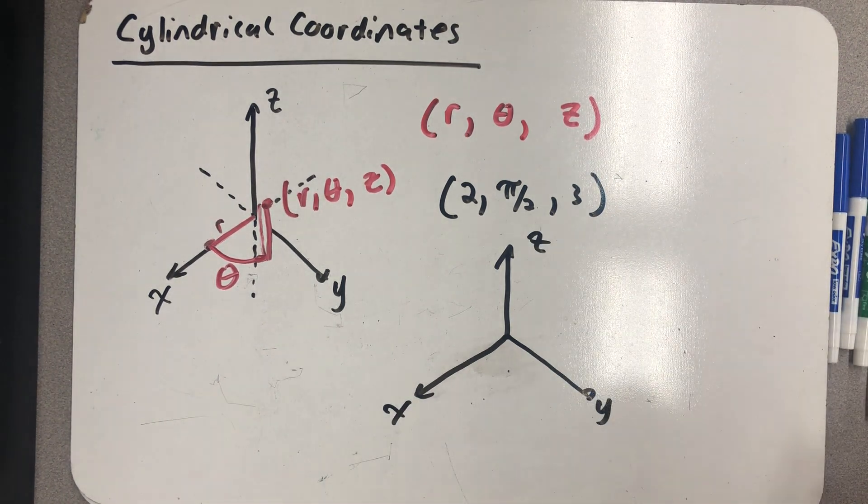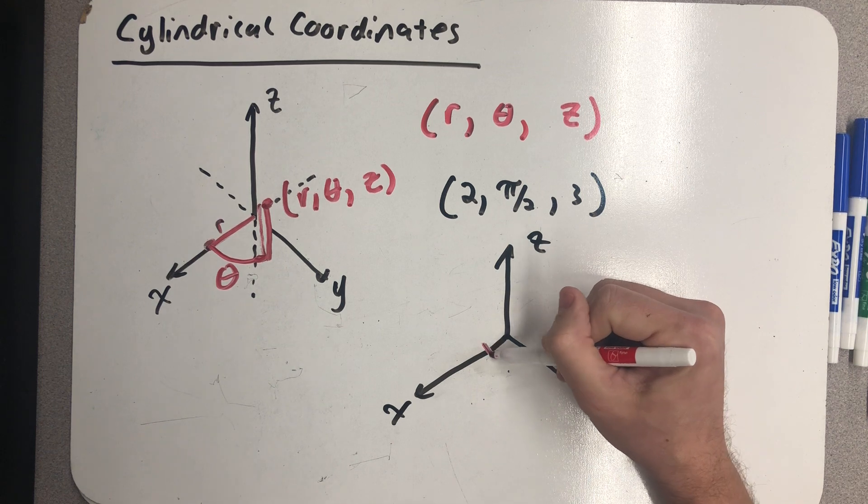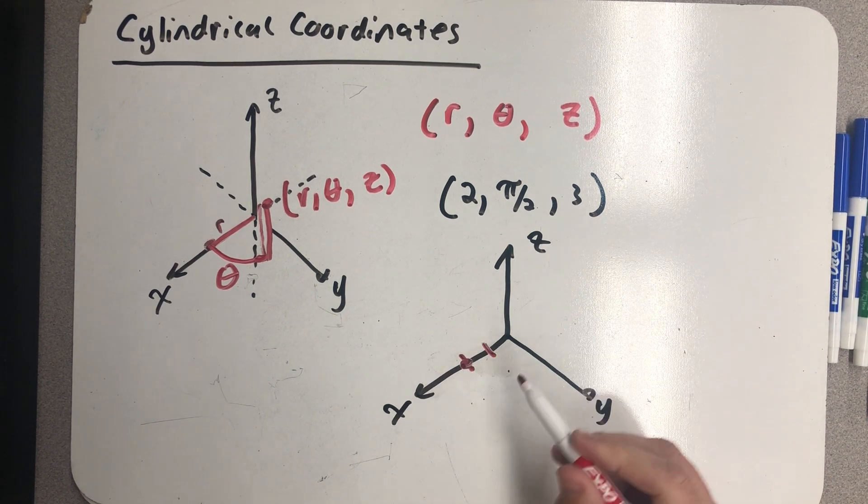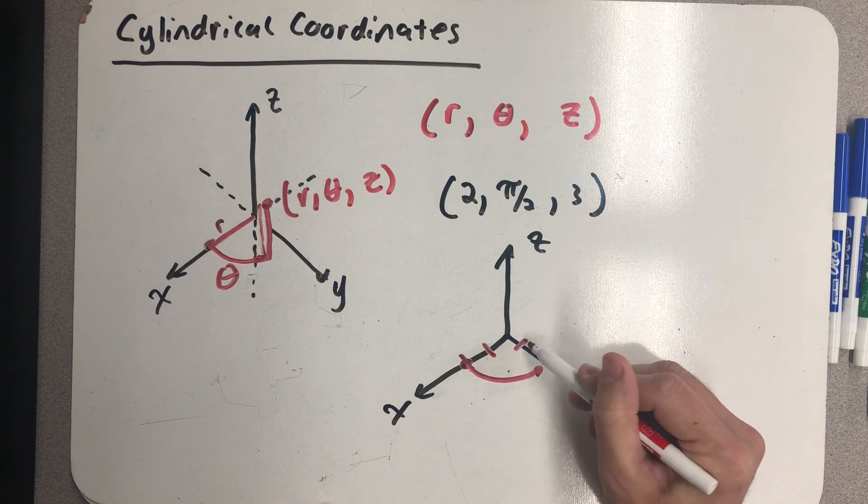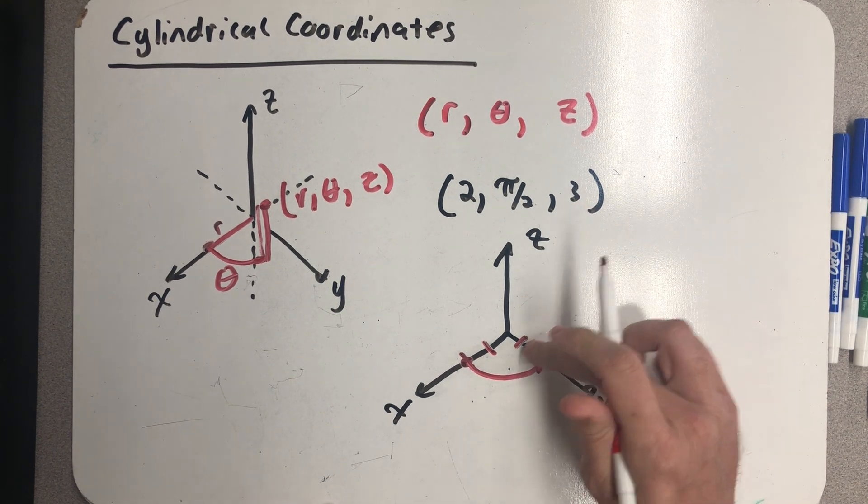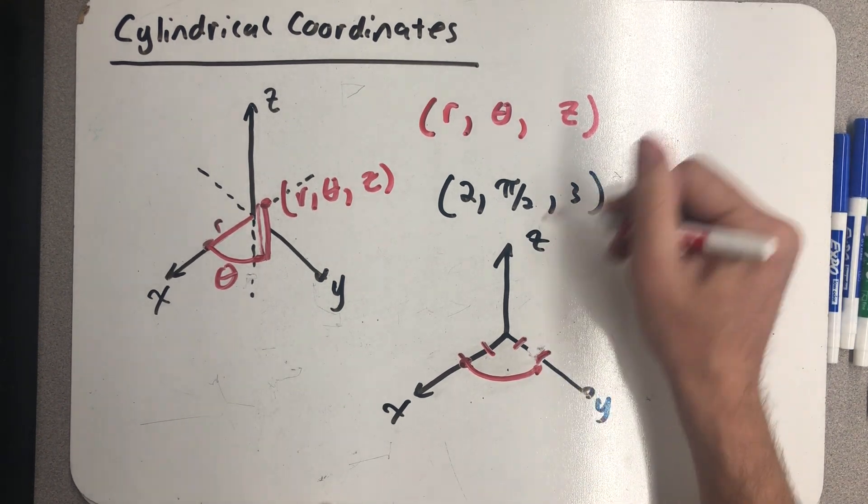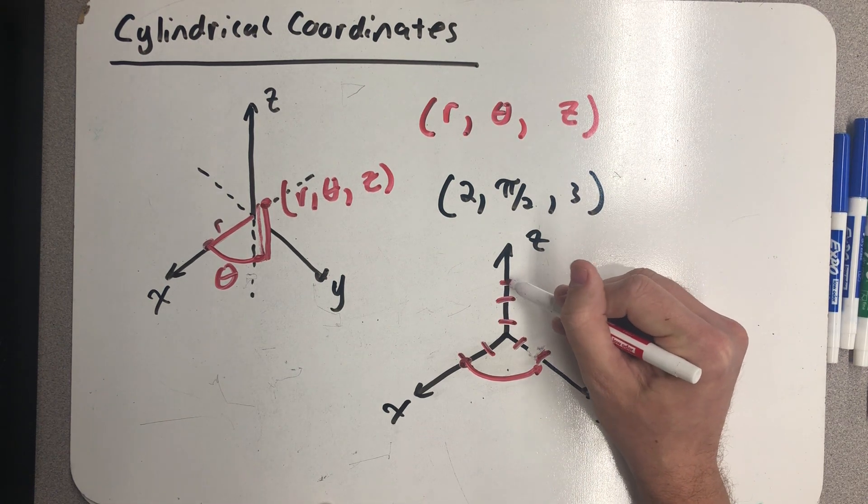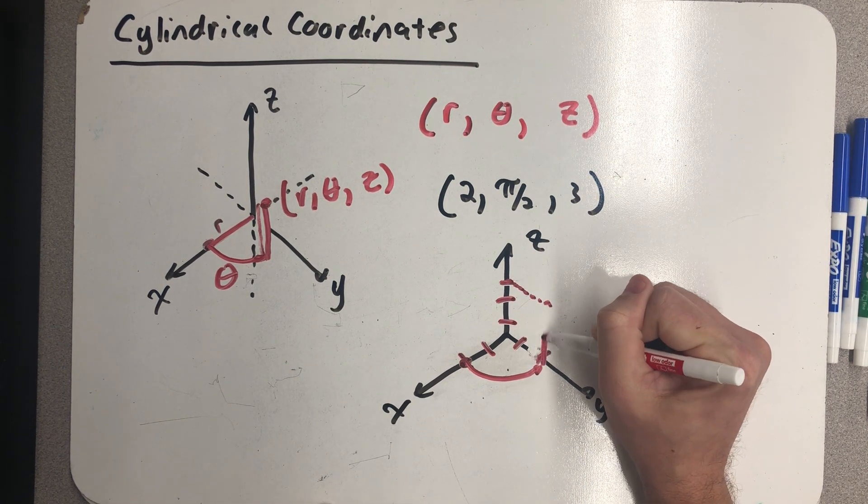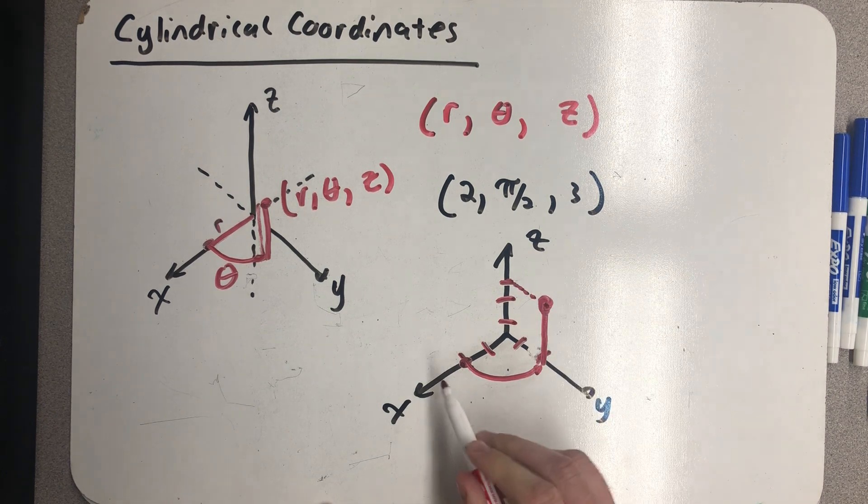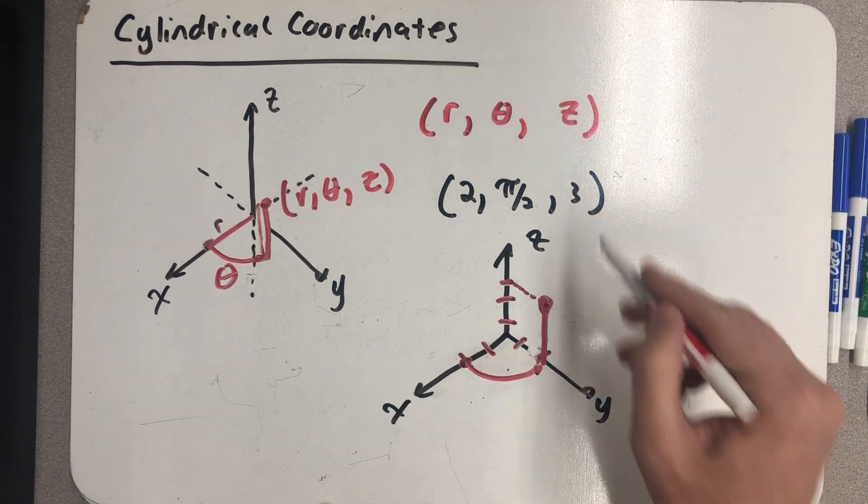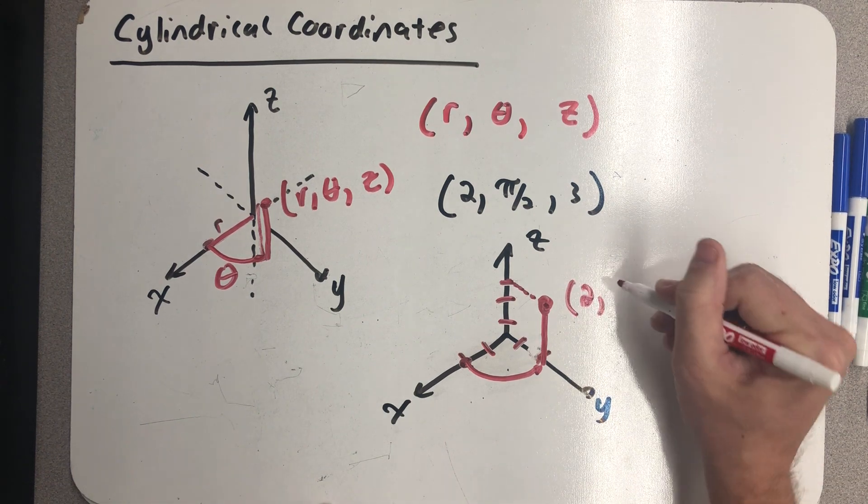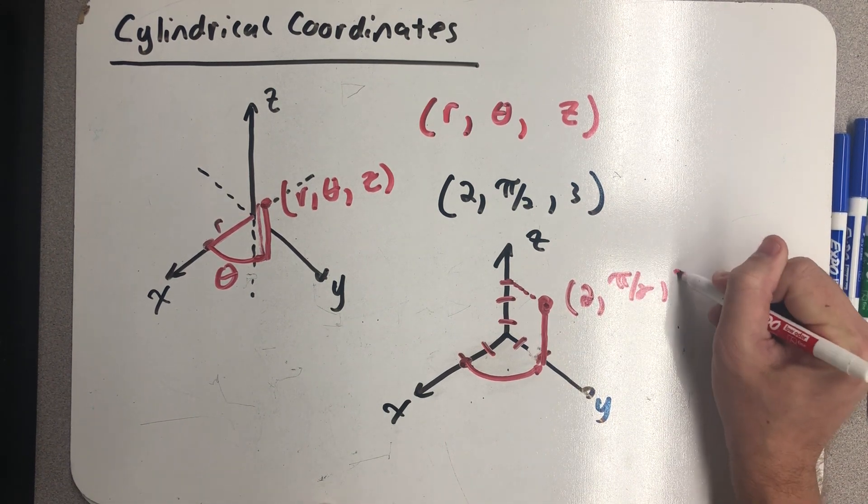So I would need to think about going two units out on the x axis, rotating an angle of pi halves, and then from that, out two units there, and then up three, one, two, three. And in perspective, I'd be looking at that point right there, having rotated an angle of pi halves, I'm in the yz plane. So this is the point 2, pi halves, 3.